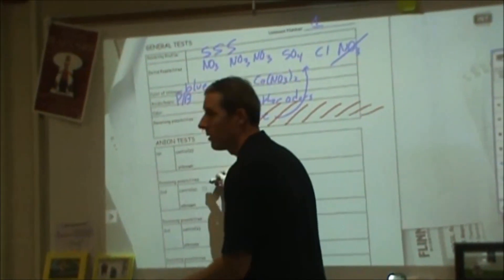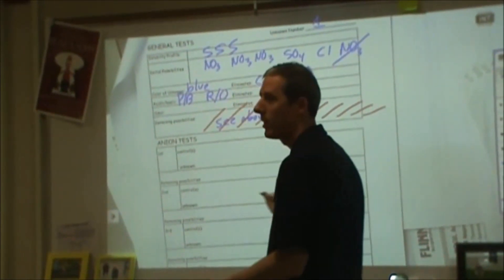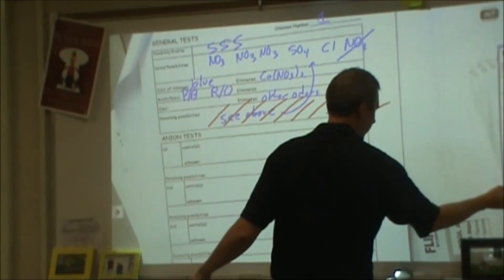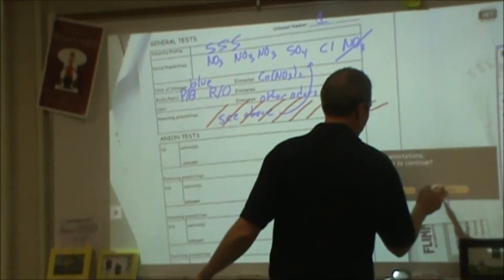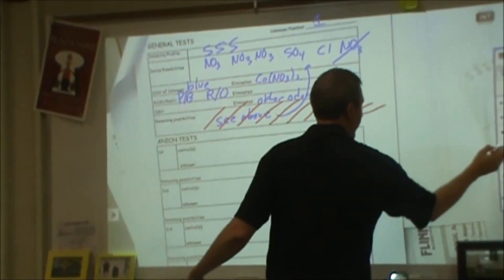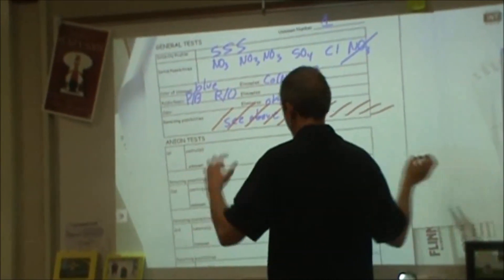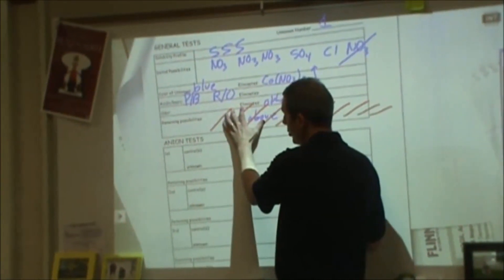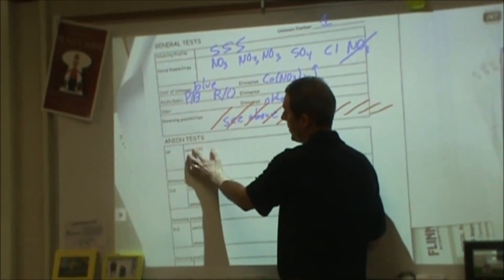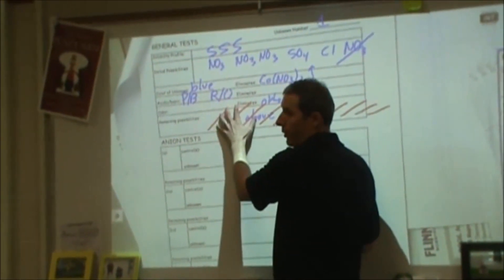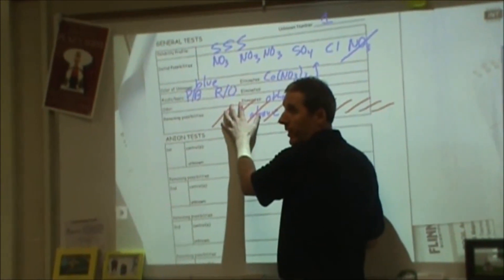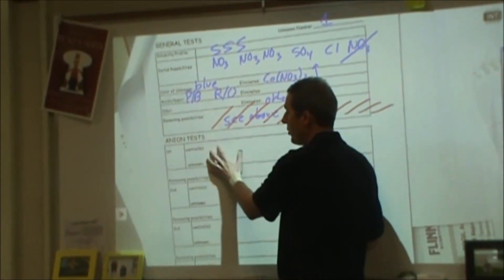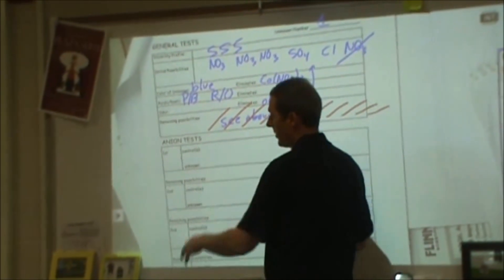Some kids do that every single time and then get a bad grade. Then you should be doing the first anion test — it should be your first grouping of anions. So if nitrates is first, you should run the nitrate test.